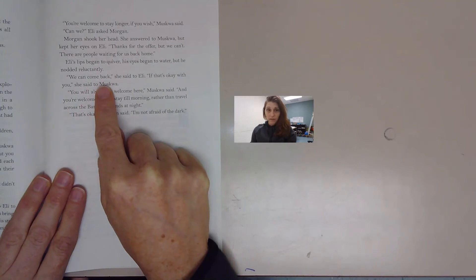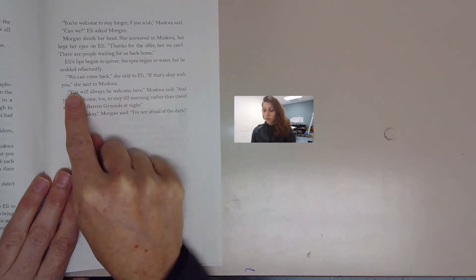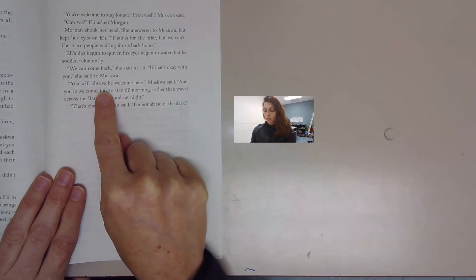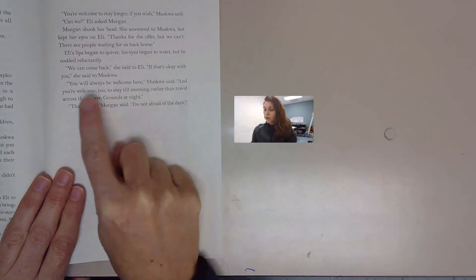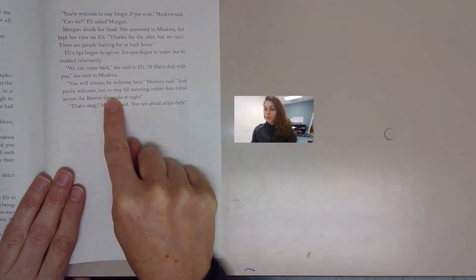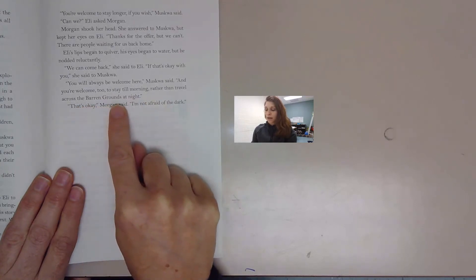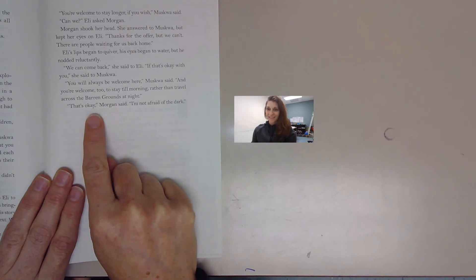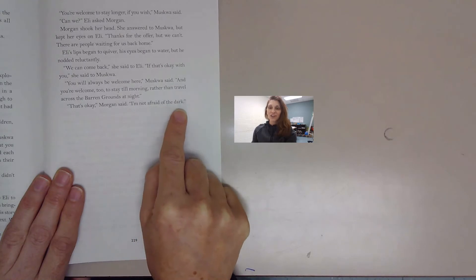We can come back, she said to Eli. If that's okay with you, she said to Muskwa. You will always be welcome here, Muskwa said. And you're welcome too to stay till morning, rather than travel across the barren grounds at night. That's okay, Morgan said. I'm not afraid of the dark.